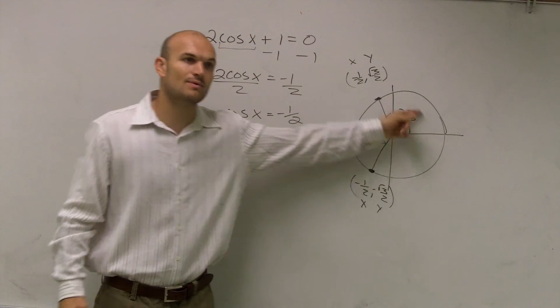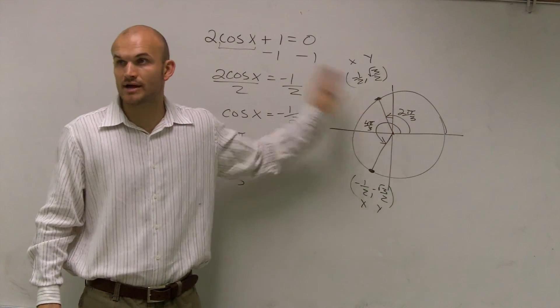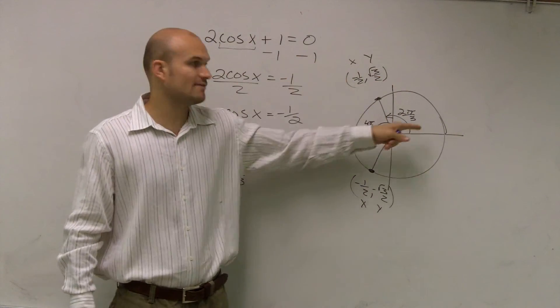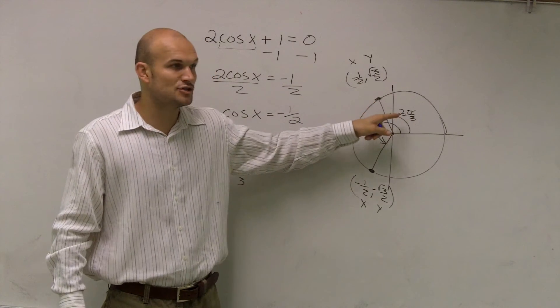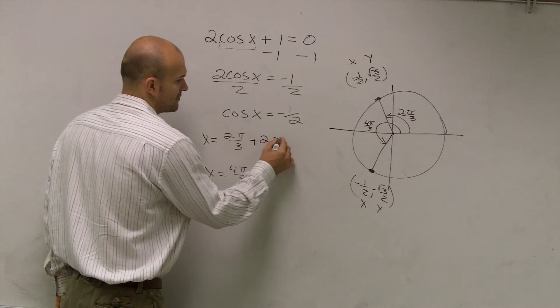But remember, as we keep on going around, we have coterminal angles, right? Remember when I showed you with the graph? It's just 2 pi over 3, but it's also all the multiples of 2 pi over 3.